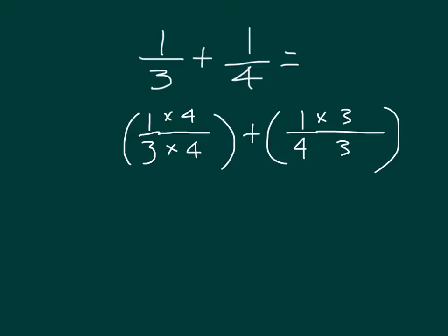1 times 4 is 4. And 3 times 4 is 12. 1 times 3. And that should be over 4 times 3. And I'll write in that multiplication sign there. 1 times 3 is 3. And 4 times 3 is 12. So we got an equivalent fraction for 1 third of 4 twelfths and an equivalent fraction of 1 fourth as 3 twelfths.